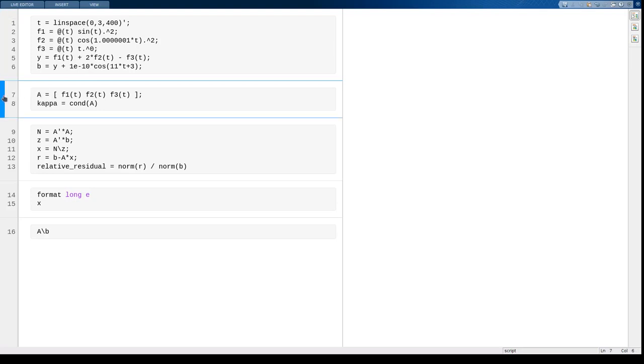Okay, so the matrix is set up the same way, and now we see the condition number is about 10 to the 7th.